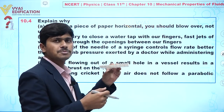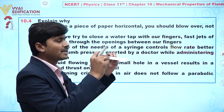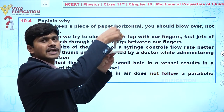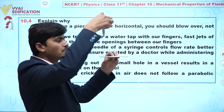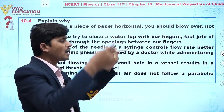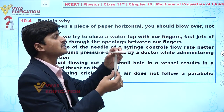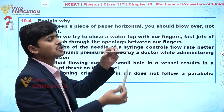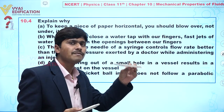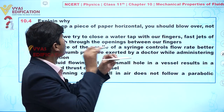Let us first understand all the forces and pressures acting on this paper. We can see that atmospheric pressure is acting in a perpendicular downward direction on the top of the paper. Below the paper, we also have the same atmosphere, so atmospheric pressure is acting upward as well.